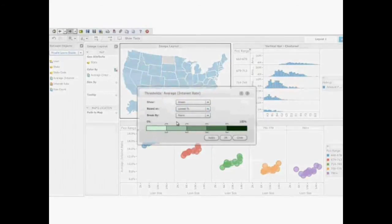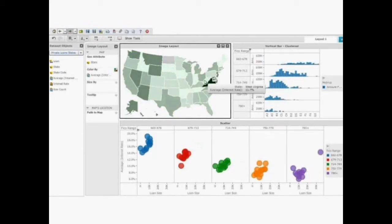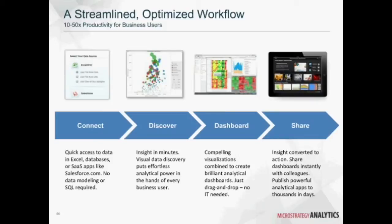You can also bring in additional data on the fly — for example, adding interest rates by state to the loan data. With multiple data sets, you can blend data on the fly, create measures, metrics, and KPIs spanning multiple sources, and combine different data points into a single or combined visualization. You can rearrange visuals and add geographic map visualizations, with the tool providing capability to filter data on the fly and link visualizations together. This workflow — connect to any data, discover insights, create quick dashboards — works very well for business users.